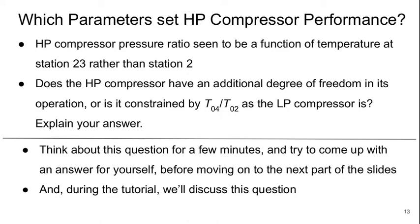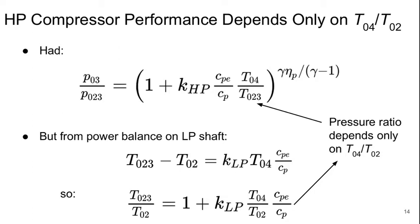Welcome to part 3 of lecture 20 of Aerospace Propulsion. So we left off with this question of, is there an extra degree of freedom for the high pressure compressor because of a different temperature ratio appearing in the expression? The answer is no.